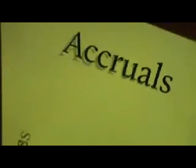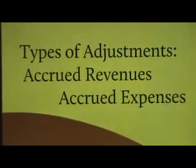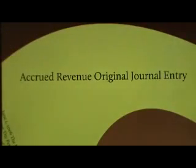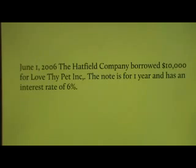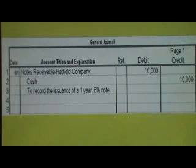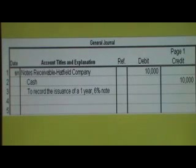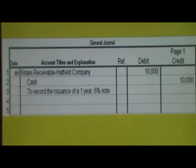Accruals — types of adjustments: accrued revenue and accrued expenses. For the original journal entry, on June 1st 2006 the Hatfield company borrowed ten thousand dollars. The note is for one year and has an interest rate of six percent. Notes receivable — Hatfield company — ten thousand is debited; cash is credited for ten thousand. This is to loan the Hatfield company ten thousand dollars. Note that interest is not accrued at this point in time.